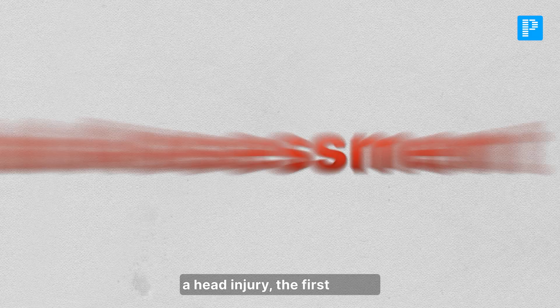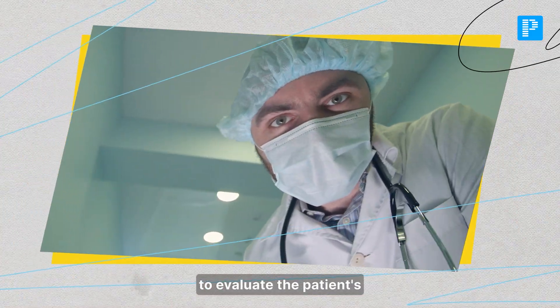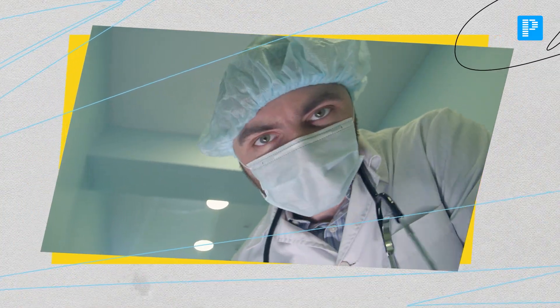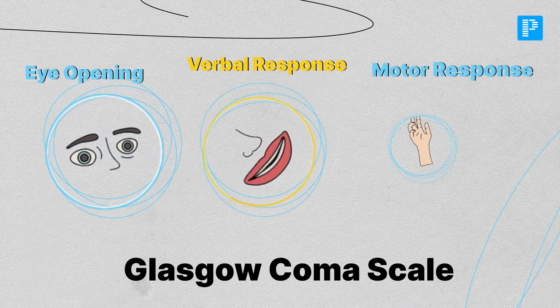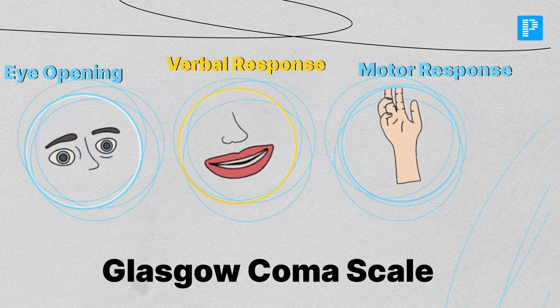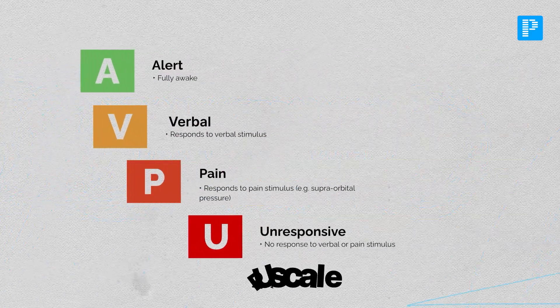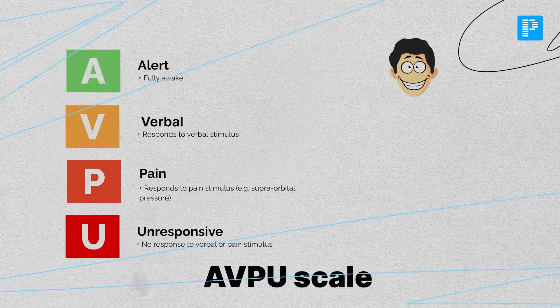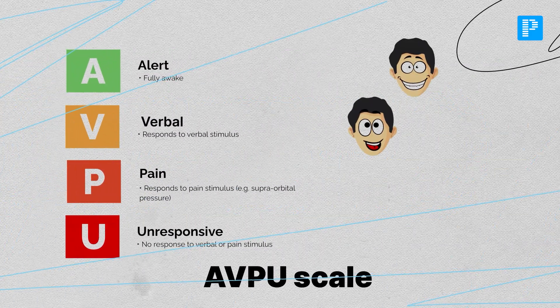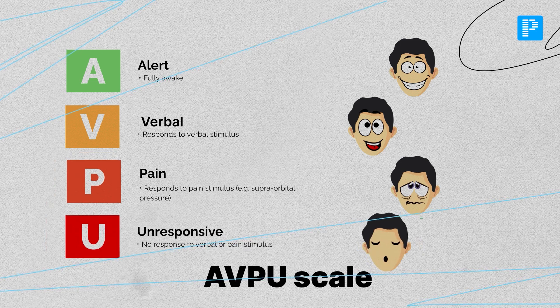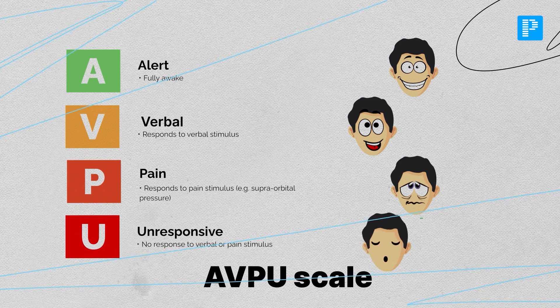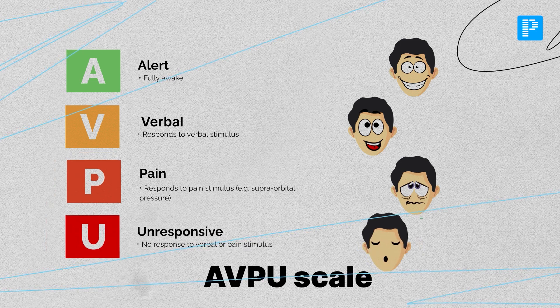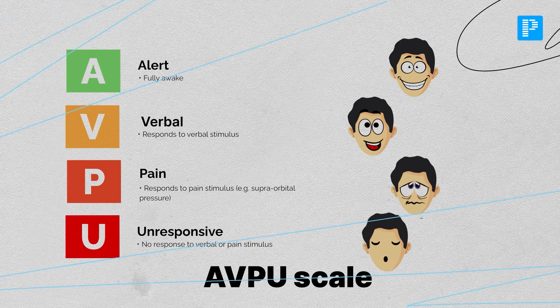When assessing a head injury, the first step is to evaluate the patient's level of consciousness. You can use either the Glasgow Coma Scale or the AVPU Scale — Alert, Verbal, Pain, or Unresponsive — to get a quick snapshot of brain function.